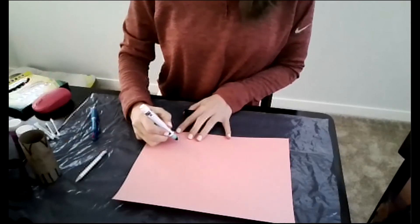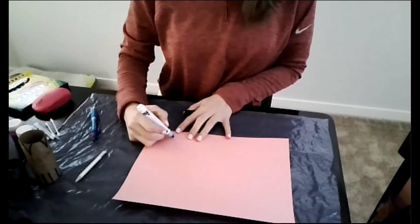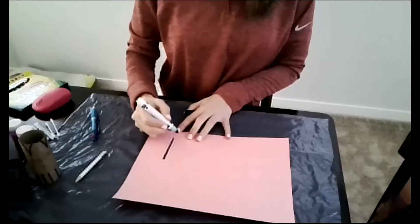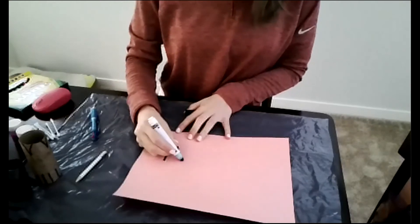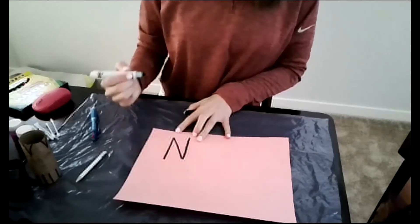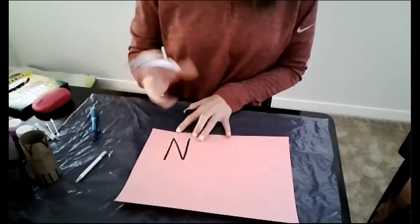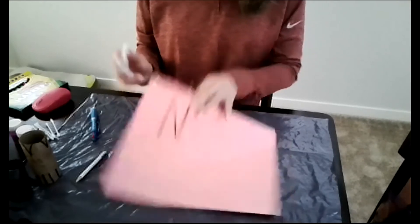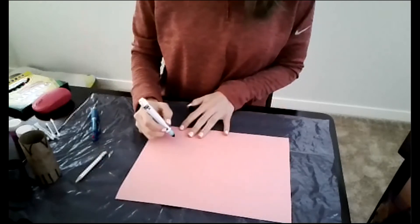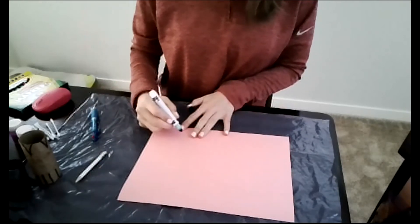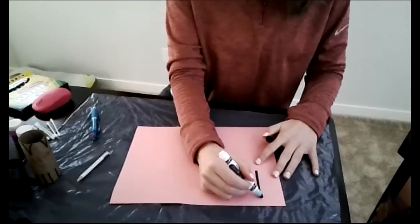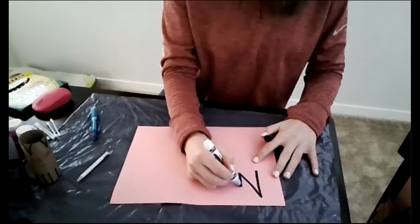So for a capital N, which is a frog jump letter, I would do big line down, frog jump up, down, and then up. And I tried to do it upside down so you guys could see, but my camera flipped it. Let's try it now. No, my brain can't process. I'll just do it for myself, not for you guys. Big line down, frog jump up, down, and then up.